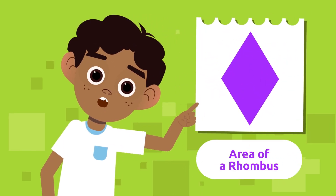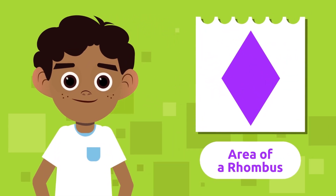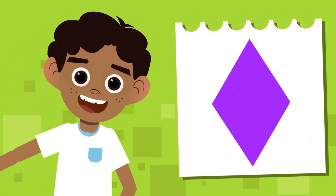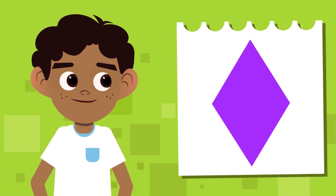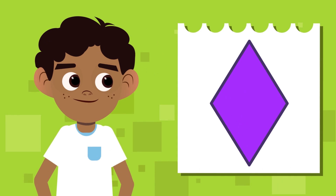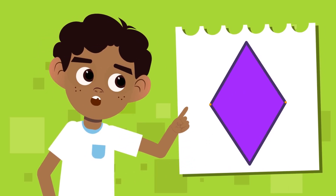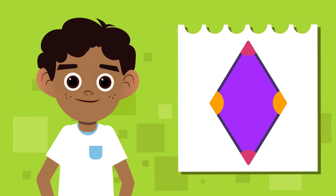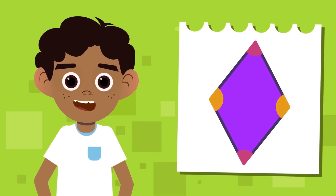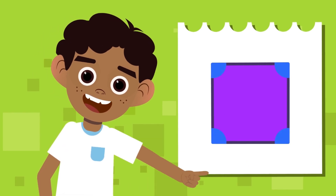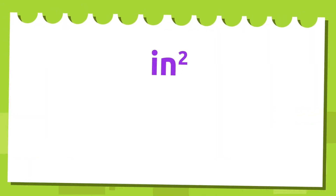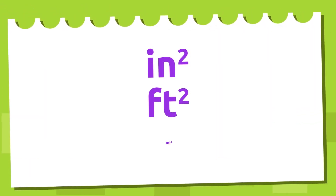Today we are going to show you how to calculate the area of a rhombus, also called the surface of a rhombus. Let's start by remembering what a rhombus is. A rhombus is a parallelogram with four equal sides. Its opposite sides are parallel and its opposite angles are equal, but they must be different from each other — meaning not all angles can be 90 degrees, because that would make it a square.